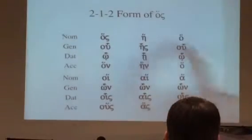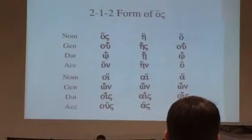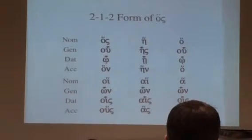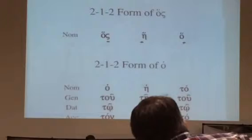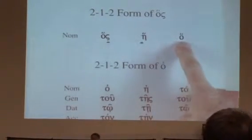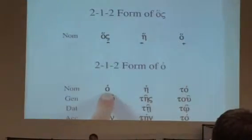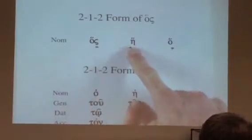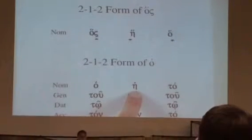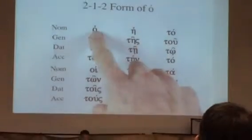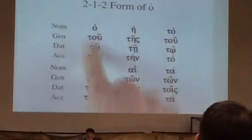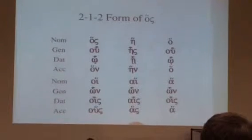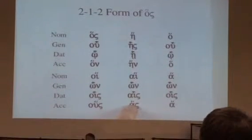The neuter singular nominative and accusative lack the nu. Otherwise, these are the endings from the 2-1-2 pattern. This can be a little bit challenging — telling the difference between the article and the relative pronoun. You look at haw, which is the neuter relative pronoun. You look at haw, which is the masculine article. You look at hey — relative pronoun. Hey without the accent — article. The article has the rough breathing and no accent, or an initial tau. The relative pronoun has the rough breathing throughout with the accent.